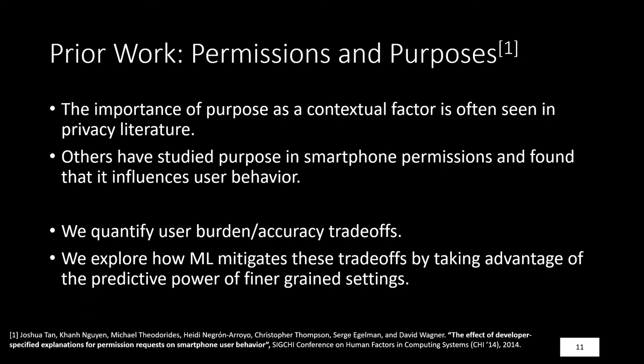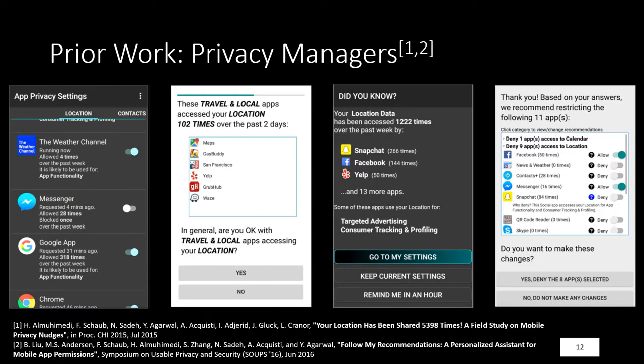In our study, we quantify the user burden and accuracy trade-offs inherent in more complex permissions models that use purpose, and in particular we explore how machine learning can mitigate this trade-off by taking advantage of the predictive power of finer-grained settings. Prior work in Android has also studied privacy managers of different types and displaying different types of information — some using notifications, nudges, and different types of data — helping users gain a better understanding of what their permissions management decisions entail.